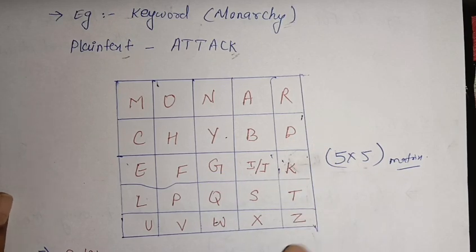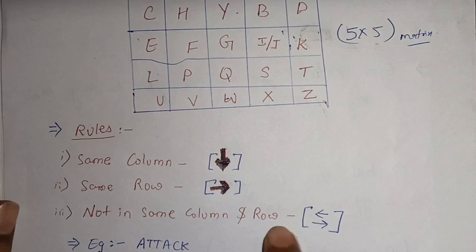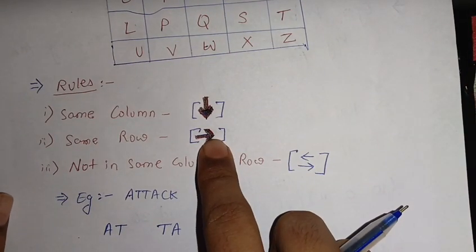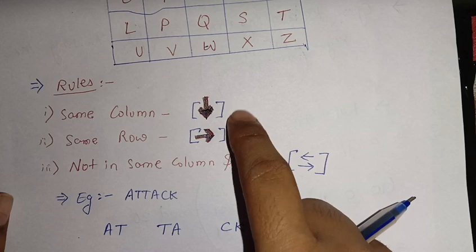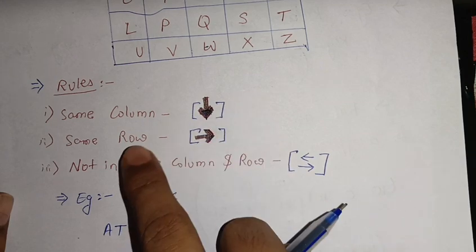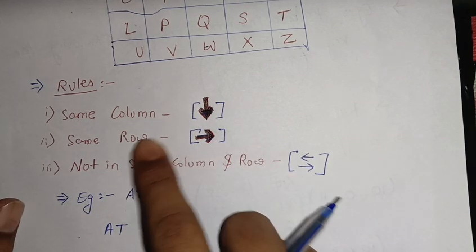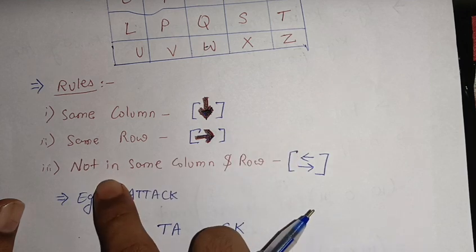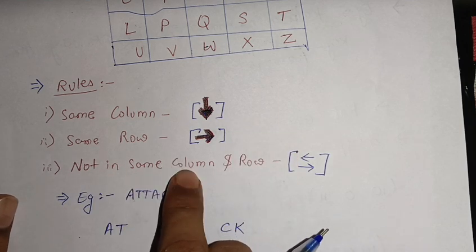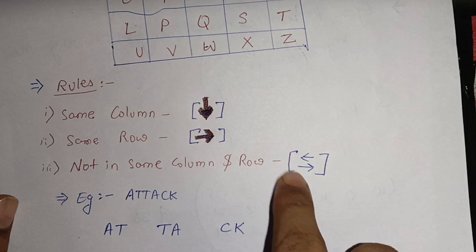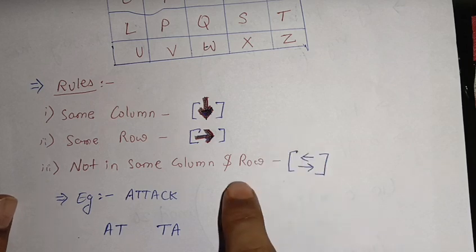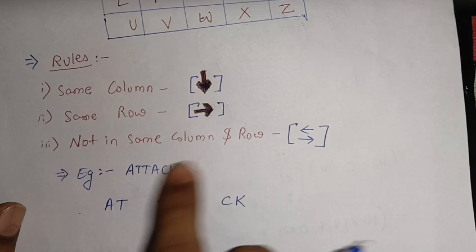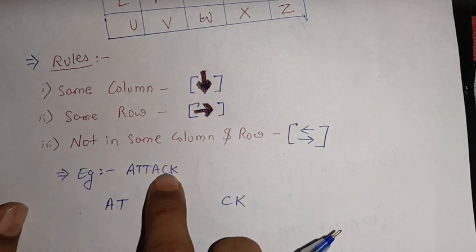After filling the matrix, we apply certain rules for encryption. If two letters are in the same column, we shift downward. If they are in the same row, we shift forward. If the letters are not in the same column or same row, we interchange them — forming a rectangle and swapping the corners.